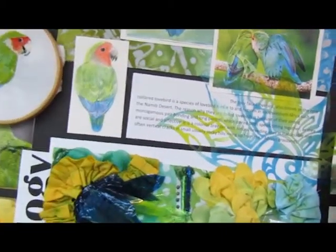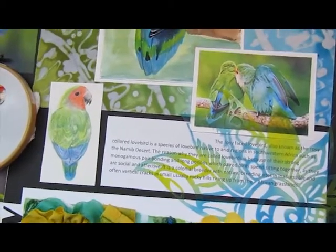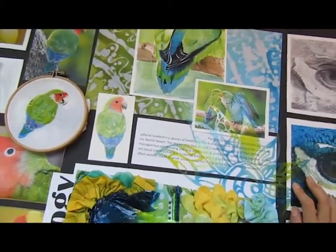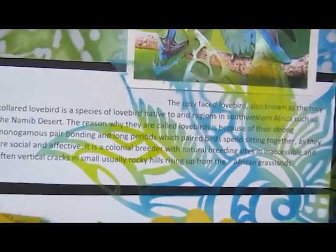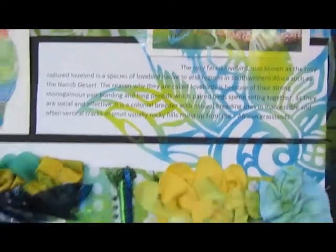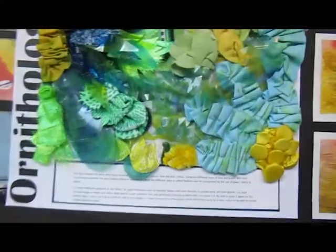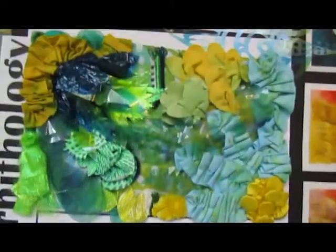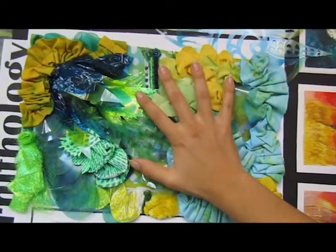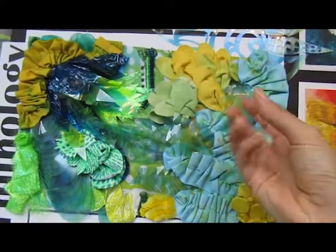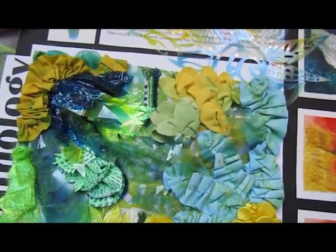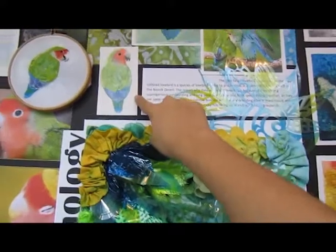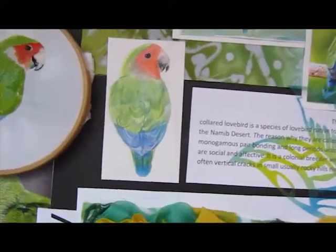Then I chose the bird I wanted to do my project on, which was the rosy-faced lovebird. There's also a description here of what I did — basically fabric manipulation with various colors, instead of just focusing on shapes. I was also focusing on the colors, which were the colors of the bird: blue and green. I didn't really use the red because I just wanted to focus on the other ones.